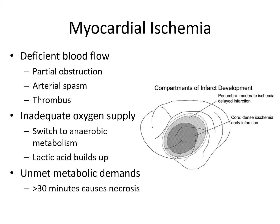Coronary heart disease is divided into chronic ischemic heart disease and acute coronary syndromes. Chronic ischemic heart disease includes stable and Prinzmetal angina, the vasospastic types. Myocardial cells become ischemic when oxygen supply is inadequate to meet metabolic demands. Myocardial ischemia results from deficient blood flow, which can be caused by a partial obstruction, an arterial spasm, or a blood clot or thrombus.